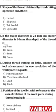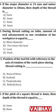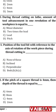Question 29: If the major diameter is 24 mm and minor diameter is 20 mm, the depth of thread is — the answer is 2 mm. Depth = (major diameter − minor diameter) / 2 = (24 − 20) / 2 = 2 mm.